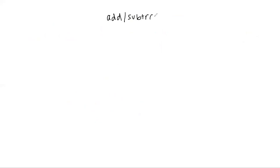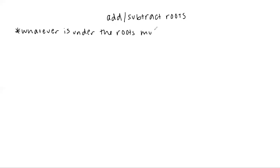We have one last type of operation to cover today: adding and subtracting roots. The way this works is that whatever is under the root has to be the same — they're almost like like terms. You could not add root 2 plus root 3, but you could add root 2 plus root 2 or root 3 plus root 3. Your roots have to be exactly identical in order to combine them.